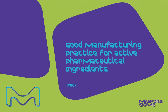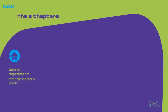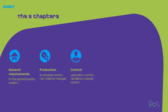The ICH Q7 Good Manufacturing Practice for Active Pharmaceutical Ingredients Guideline contains five segments: the general requirements to the applied quality system; the production, referring to topics like in-process control and raw material changes; the control, governing the needs for laboratory control; validation and change control; and external contacts, addressing supply chain topics and contract manufacturing.